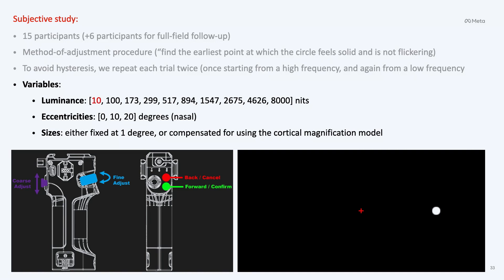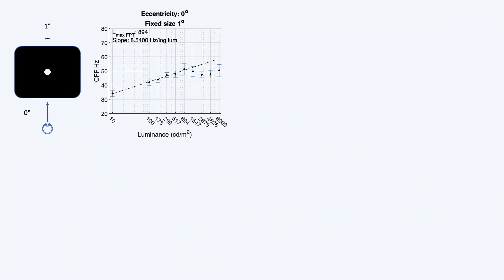In terms of our variables, we had luminances starting at 10, then log steps from 100 to 8,000, getting 10 conditions in total. We added 10 to have more overlap with existing data sets at low luminances. The eccentricities were 0, 10, and 20 degrees. The headset only had 60 degrees field of view. If you go all the way to the extremes, the optics start introducing significant distortion we couldn't compensate for. The size of the stimulus was either one degree, which is pretty small and in line with the literature, or we magnified it using a cortical magnification model, making it bigger for eccentric stimuli to compensate for the reduction in receptor frequency.